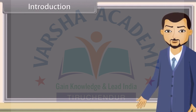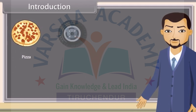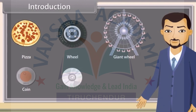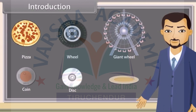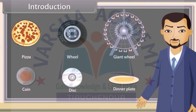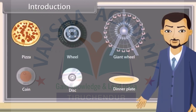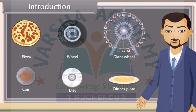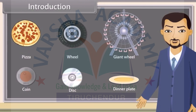Look at these things: pizza, wheel, giant wheel, coin, disc, dinner plate. All these are examples of a circle. Today we will study about circles and the properties of circles. Come, let's start.